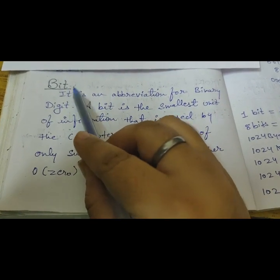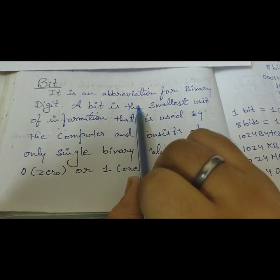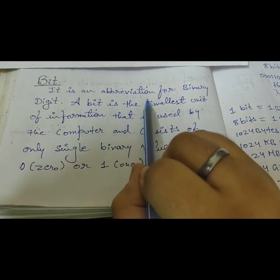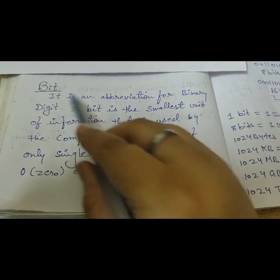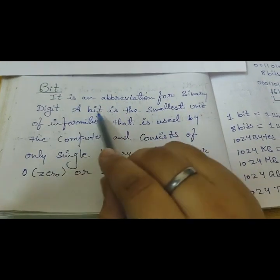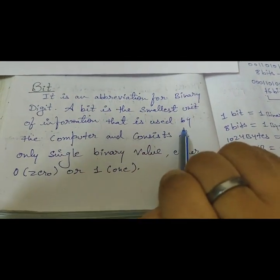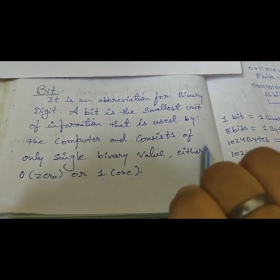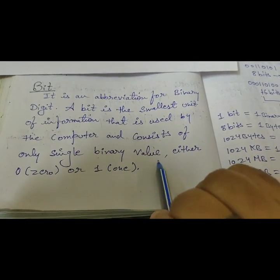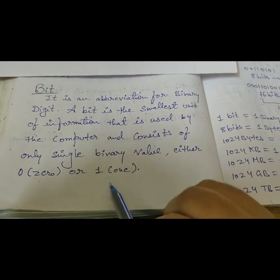Full form I told you binary digit. It is abbreviation for binary digit. It means a full form. It is a short form of binary digit. A bit is the smallest unit of information that is used by the computer and consists of only single binary value either 0 or 1.